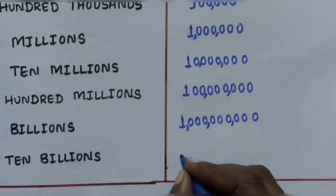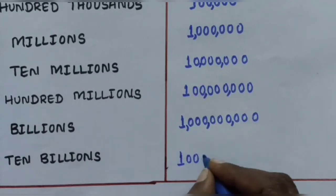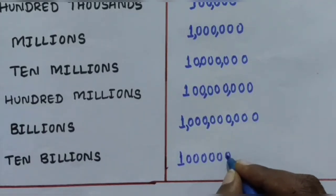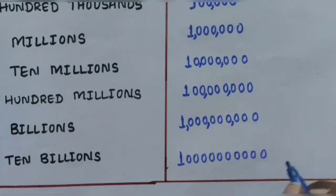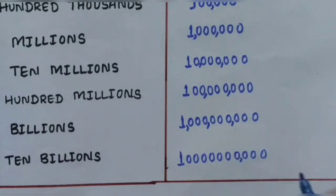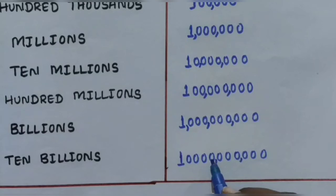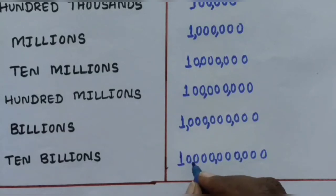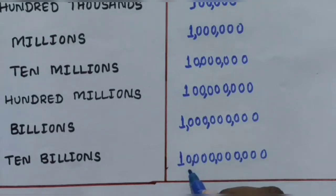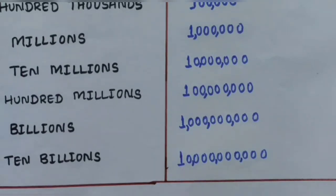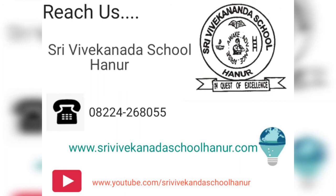Next is Ten Billions, written as 10,000,000,000 - one followed by ten zeros. The first comma after hundreds and thousands, the second comma applied for millions (Hundred Thousands, Ten Thousands), and the third comma for billions: Million, Hundred Millions, then Ten Billions. Thank you.